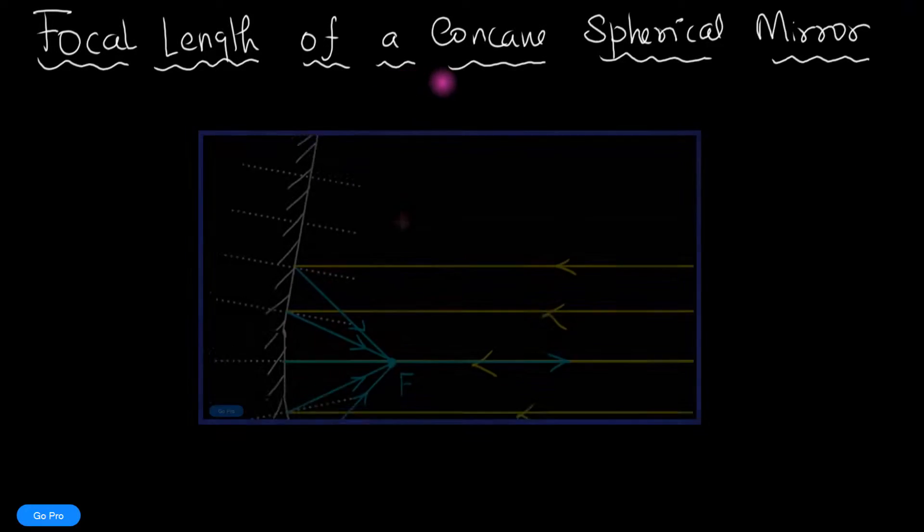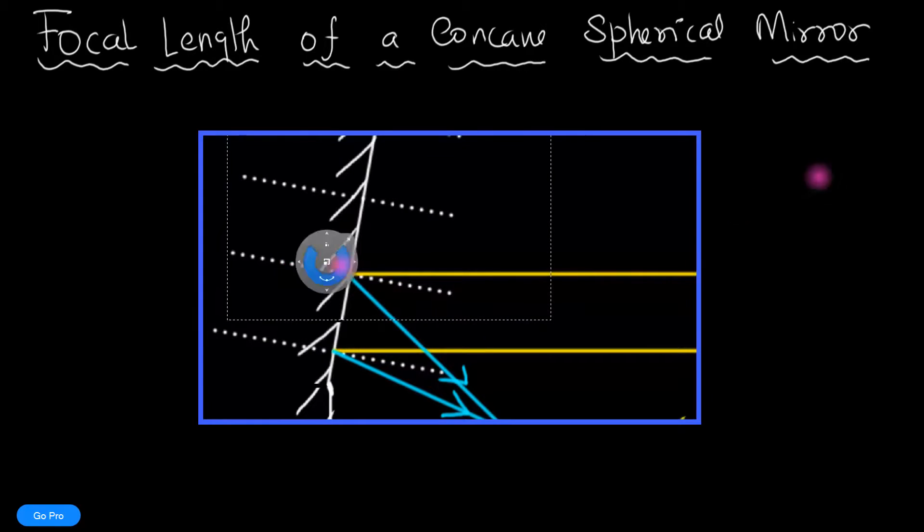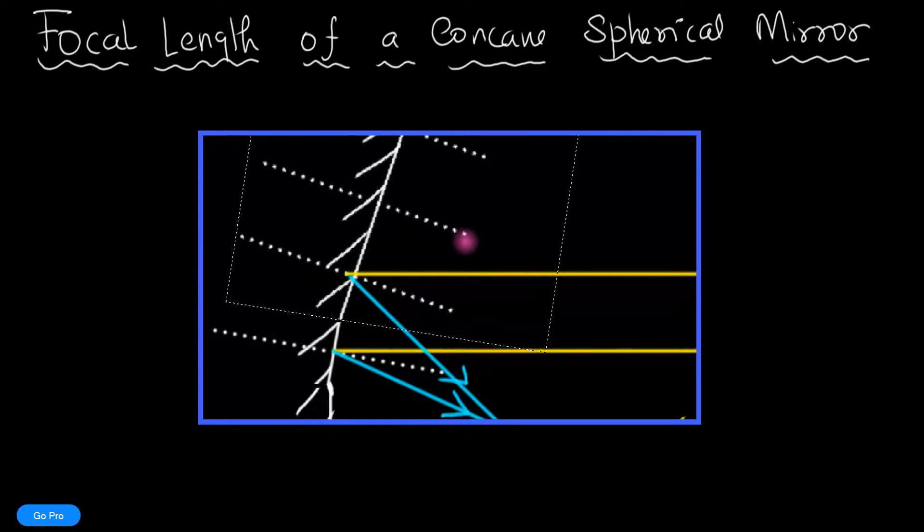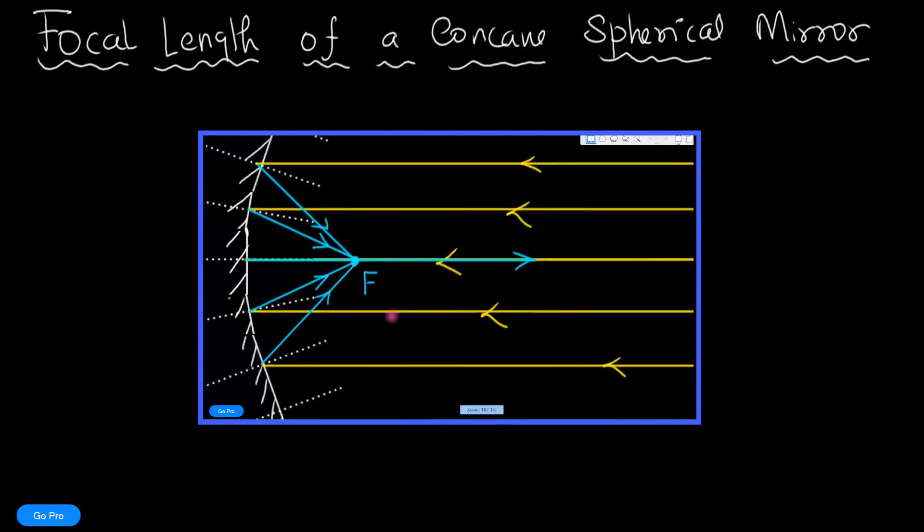Last time I told you how a concave shape can converge a beam of parallel light and bring it to a focus at a single point.